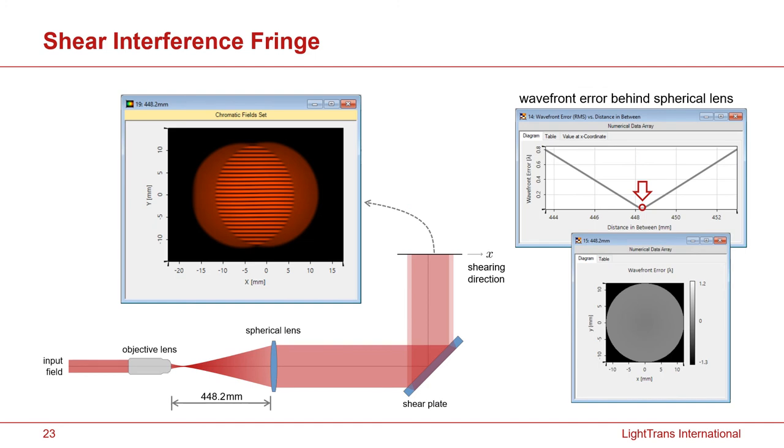And then we put the shearing interferometry behind the collimation system to check the effect. First, if we set the distance between the two lenses exactly at the best distance, then you see the interference pattern in the way that the fringes are perpendicular to the direction of the shearing. So horizontally you see two spots separated, and then vertically you see the interference pattern. That's exactly expected for perfectly collimated light.